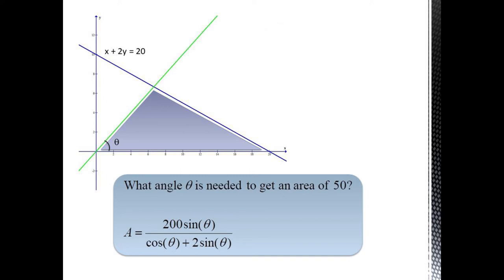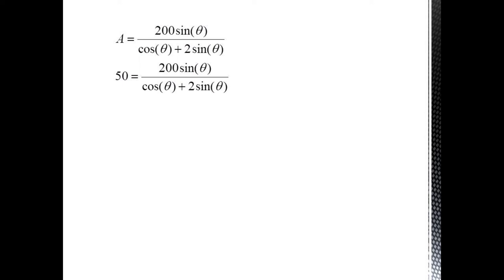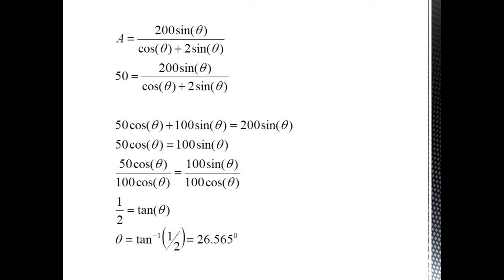What choice of theta would result in an area of 50 square units? Substituting 50 for A, we now have an equation in the single variable theta. We can multiply both sides by cosine plus 2 sine to get rid of the fraction. Now we have 50 cosine theta plus 100 sine theta equals 200 sine theta. Subtracting 100 sine theta from both sides leaves us 50 cosine theta equals 100 sine theta. This may look odd, but we can write this in terms of a single function if we divide both sides by cosine theta. Let's do 100 cosine theta. Then we're left with tangent theta equals one-half. Hence theta is equal to the tangent inverse of one-half, which is 26.565 degrees.